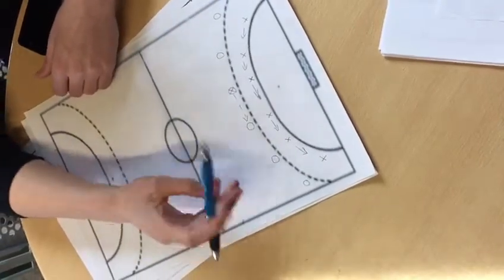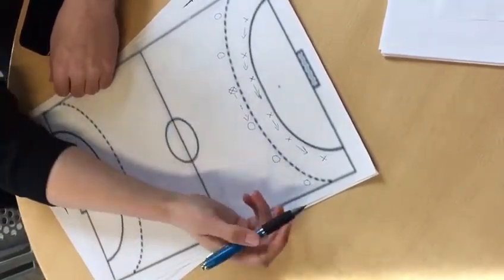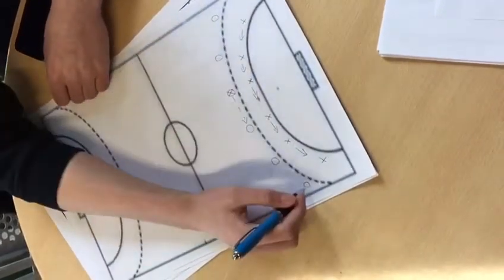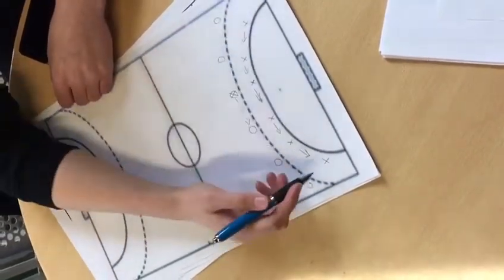But a disadvantage is if the ball moves quickly around the outside, so if it moves from here to here really quickly, then the defense will react slower.